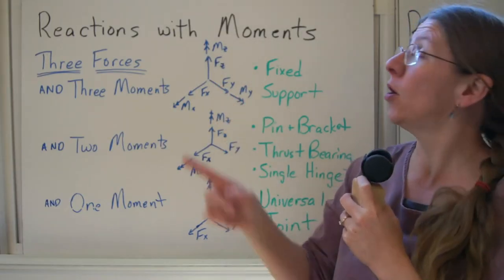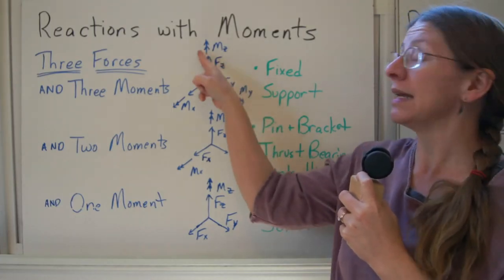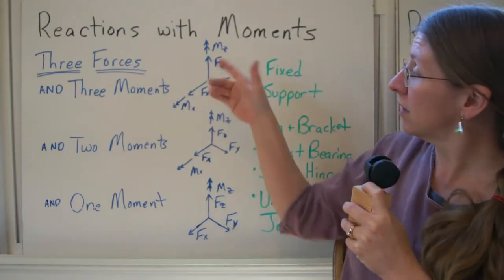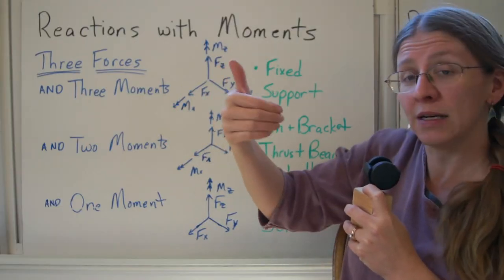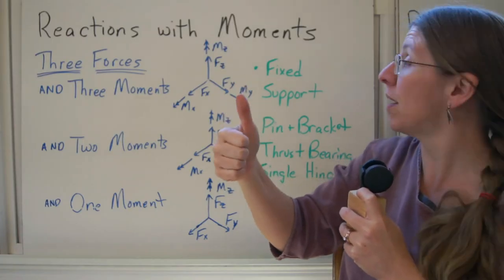The easiest way to draw a moment is with a double-headed arrow like that. So you'll see that I have FZ and MZ. They're in the same line of action. The moment that's constrained away here, the reaction that's constrained, is that direction. The direction from your moments is set by your thumb.